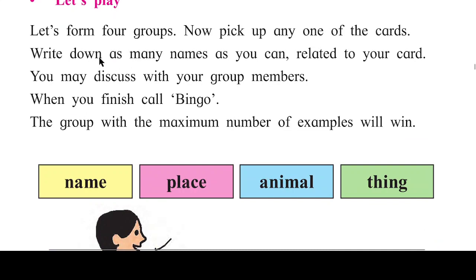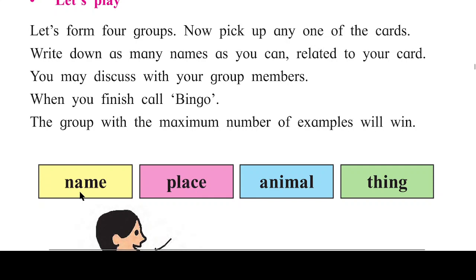Let's play! Let's form four groups — apan ko four groups form karne hain. Now pick up any one of the cards. Here we have four cards: Name, Place, Animal, and Thing. Write down as many names as you can related to your card — card ke hisaab se bahut saare naam likhna hai.